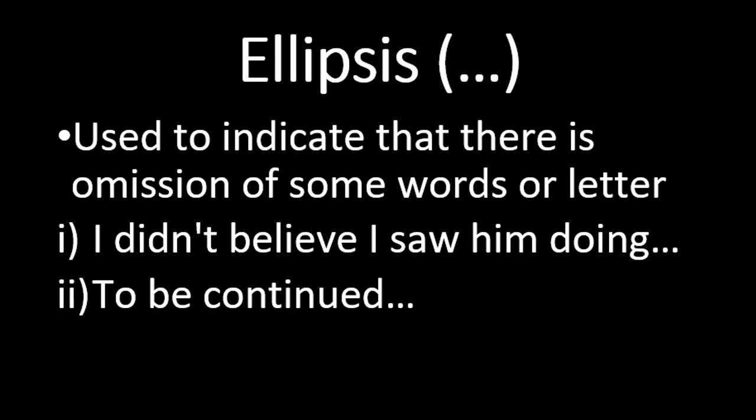The one and only use of ellipses is to indicate omission — that some words or content have been removed or shortened. For example: 'I did not believe I saw him doing...' — the ellipses shows the action is not explained and the thought is left incomplete. Another common example is 'To be continued...' at the end of a novel episode, indicating the story continues beyond this point.